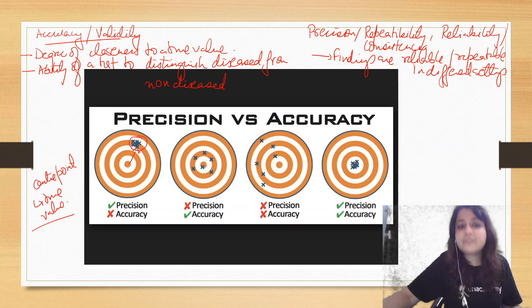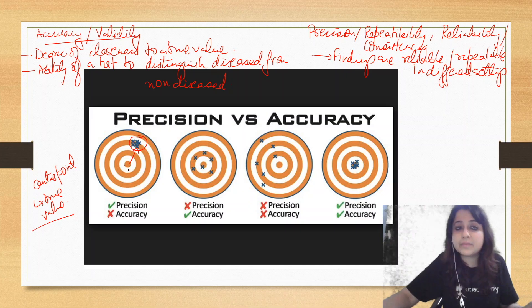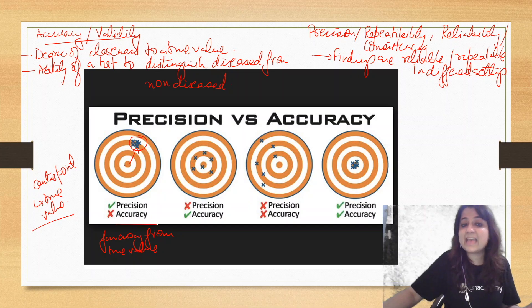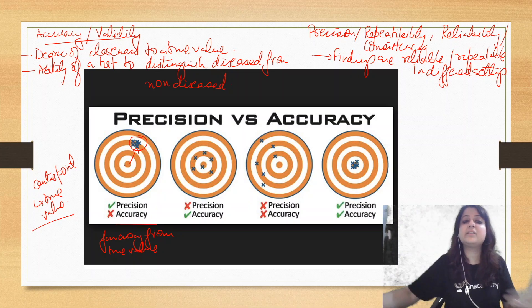But it's very far from the true value. So this has precision because every time my findings are the same, it's coming and hitting at the same point. So findings are replicable. But it's far away from the true value. So it is lacking accuracy. But every time it's hitting the same point, so the findings are repeatable, precise.